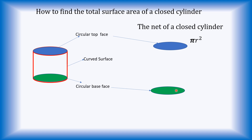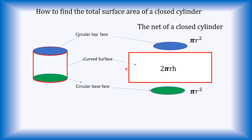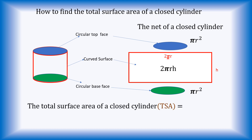Then the curved surface, if you stretch it out, becomes a rectangle. The curved surface area is equal to the area of a rectangle, which is 2 pi r h, where the length of the rectangle is equal to the circumference of the circular face, which is 2 pi r, multiplied by the height h. The height of the cylinder becomes the width of the rectangle.